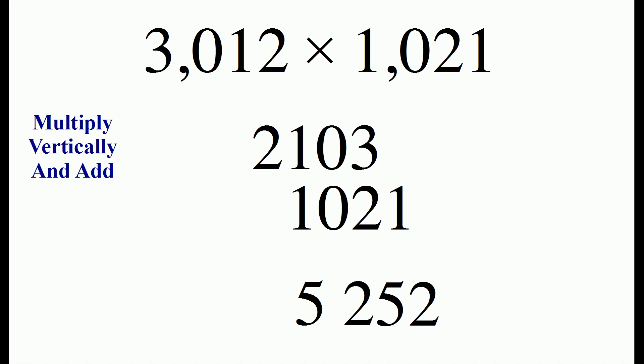We continue sliding. We have 1 times 1 is 1, 0 times 0 is 0, and 3 times 2 is 6. So we add 1 and 6 to get a 7.